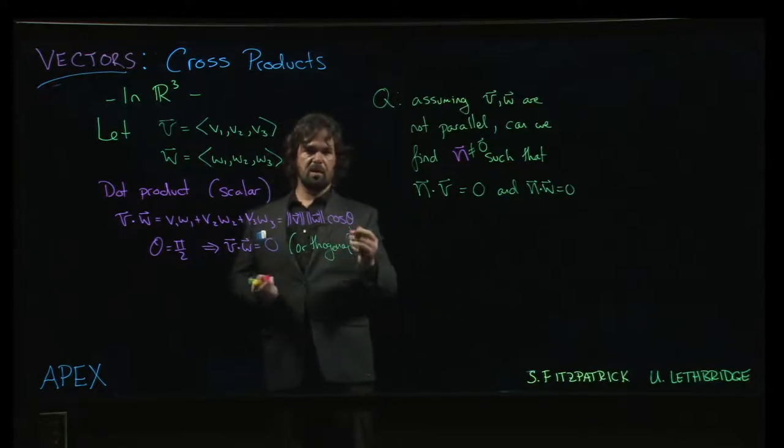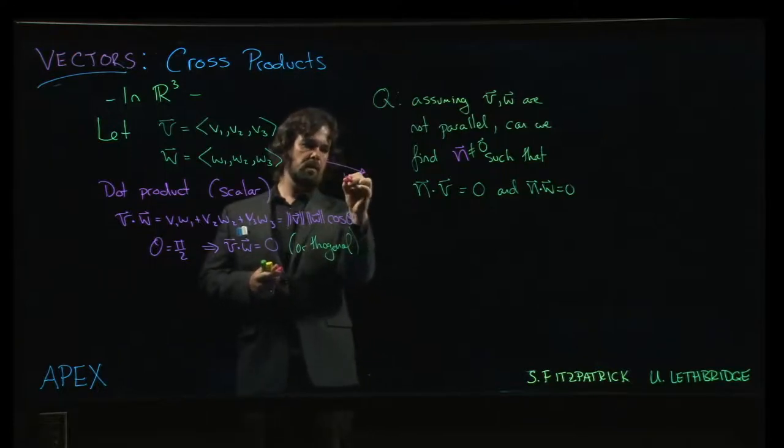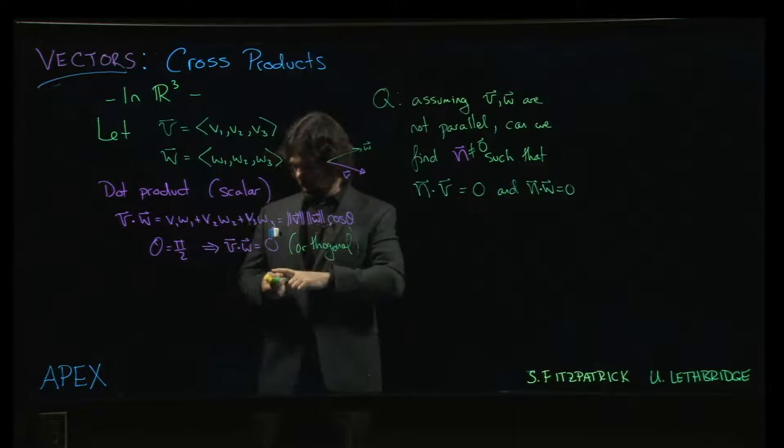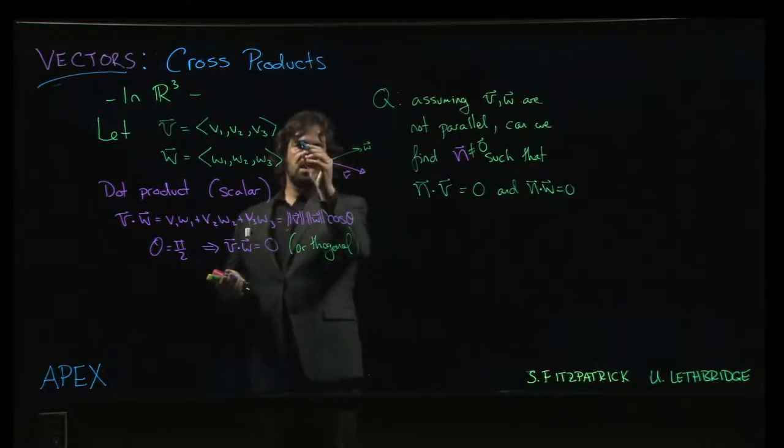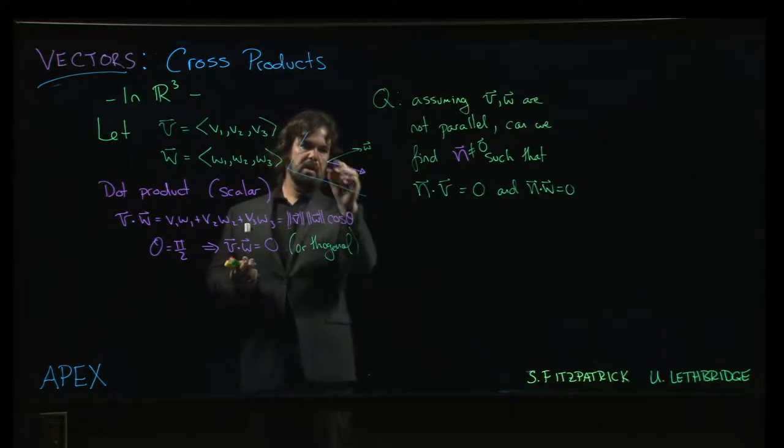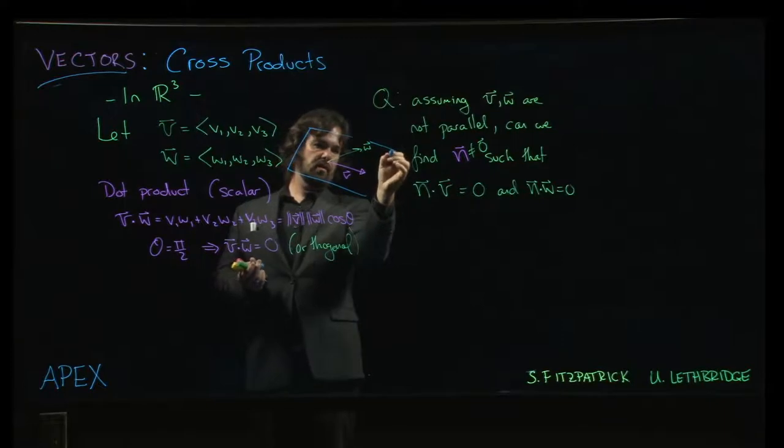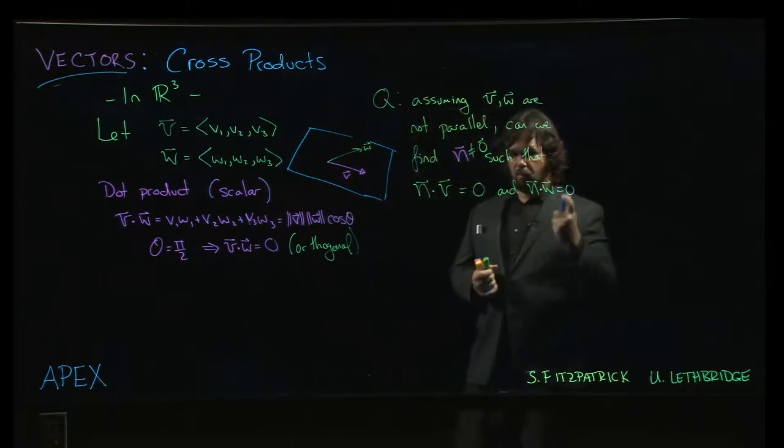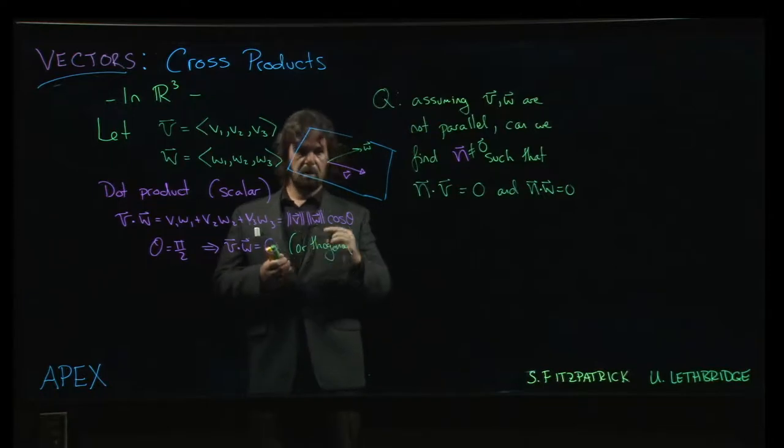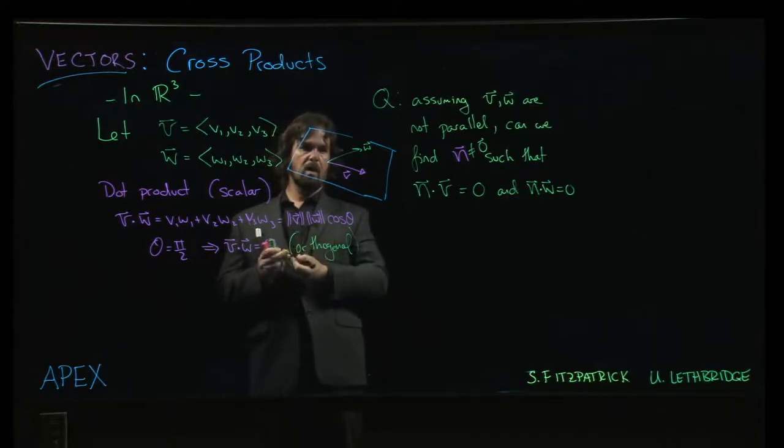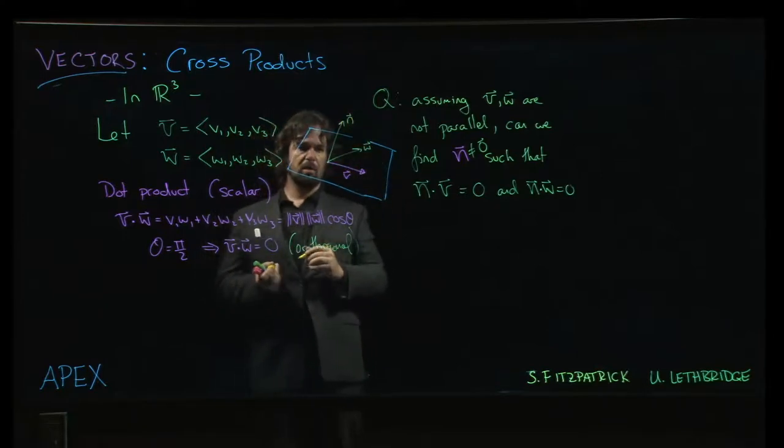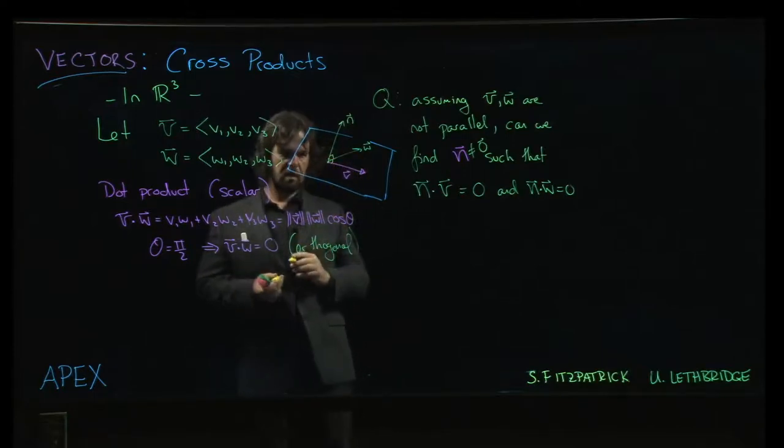The scenario that you want to think of here is you've got, say, v and you've got w. Those two vectors, they kind of define a plane in a certain sense. Once you choose a point that you want to anchor the vectors at, and we'll be talking about planes fairly soon. So you would like to find one vector which is orthogonal to both, and once you've found it, it will in particular be orthogonal to every vector that lies in that plane. So the normal vector, as we will call it, n for normal, would be orthogonal to both. This would be a right angle, and this would be a right angle.